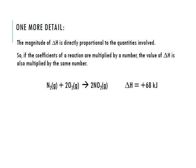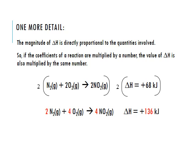Another strategy is multiplying reactions. The magnitude of delta H is directly proportional to the quantities of chemicals involved. So if the coefficients of a reaction are multiplied by some number, the value of delta H can also be multiplied by that number. For example, if we multiply our nitrogen dioxide reaction by 2, the coefficients become 2, 4, and 4, and the new delta H is 68 times 2, giving us 136 kilojoules.